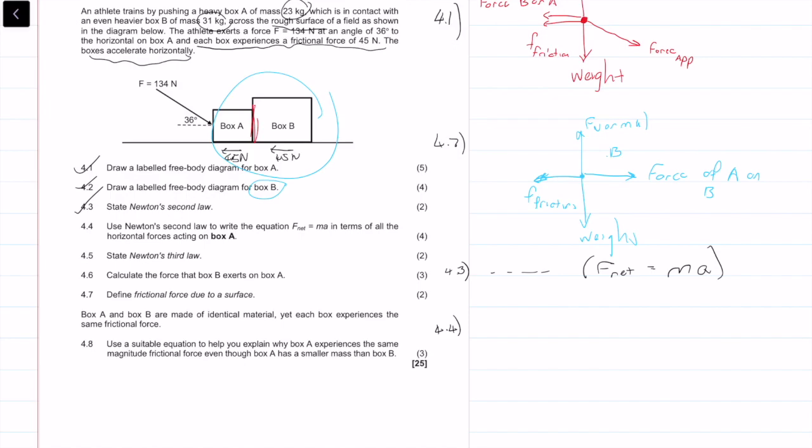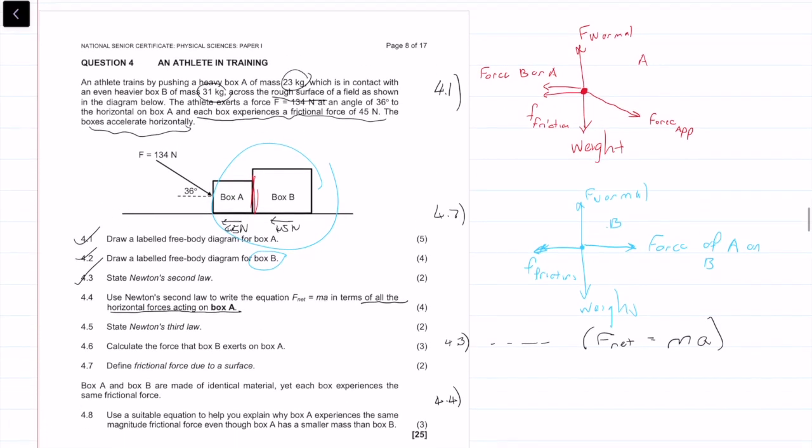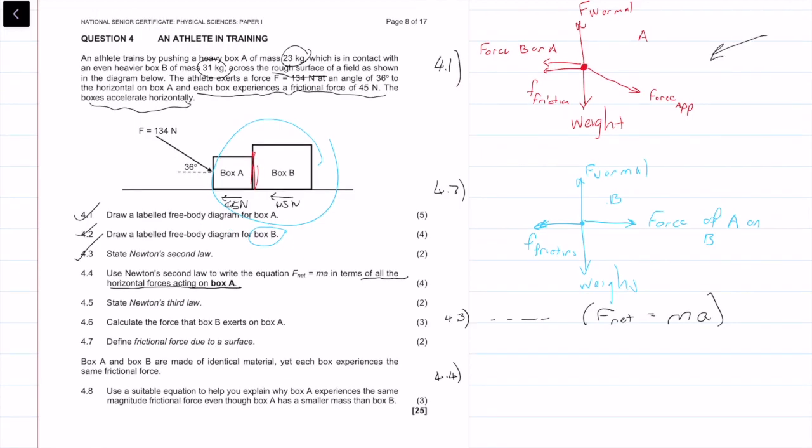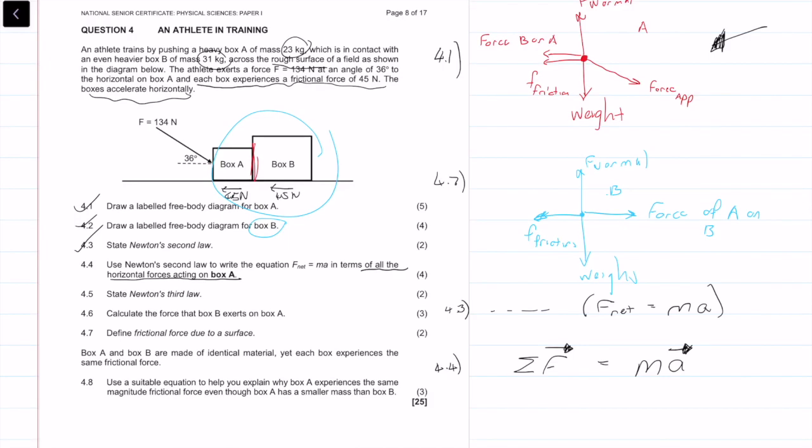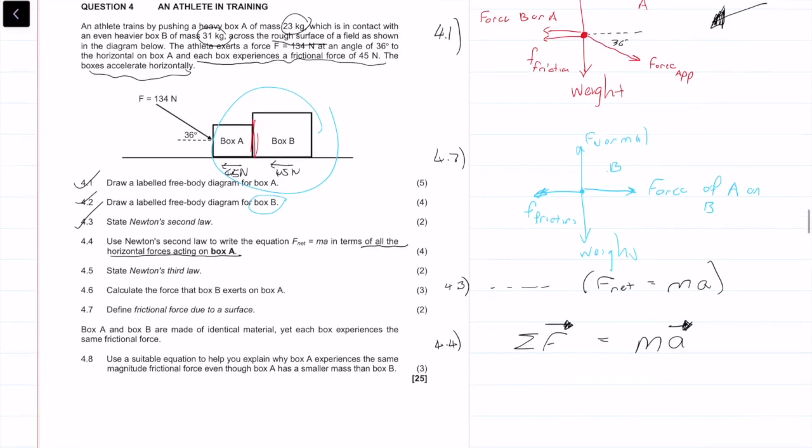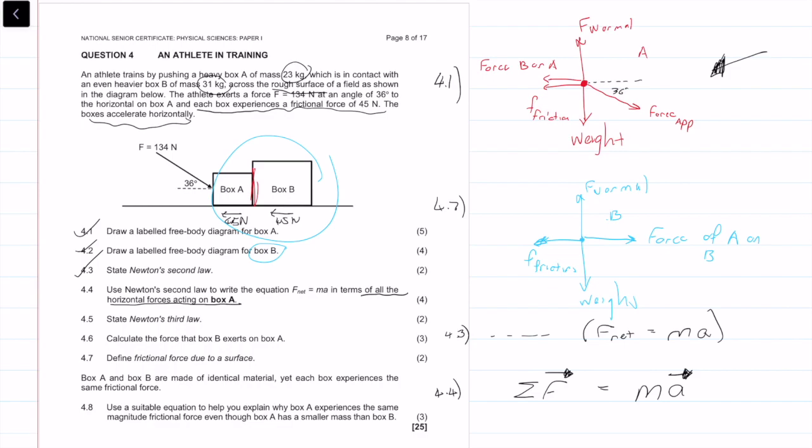Question 4.4 says use Newton's second law to write the equation F_net equals ma in terms of all the horizontal forces acting on A. We are concerned about this free body diagram right here. Basically, we're going to say that the sum of the forces in the right direction is equal to the mass times the acceleration in that direction as well. We also know that this angle right here is 36 degrees as that was given.